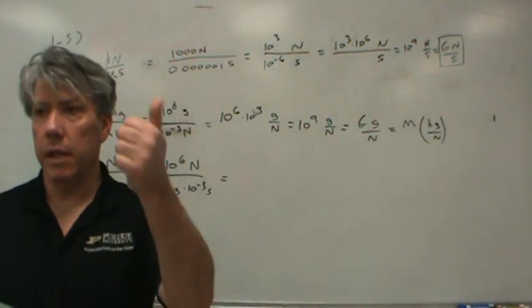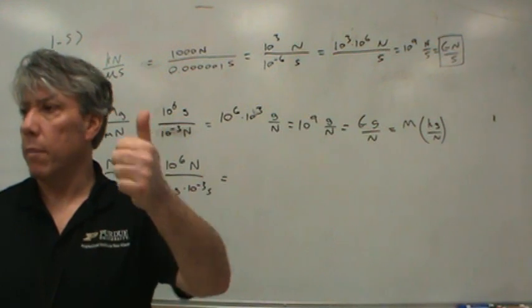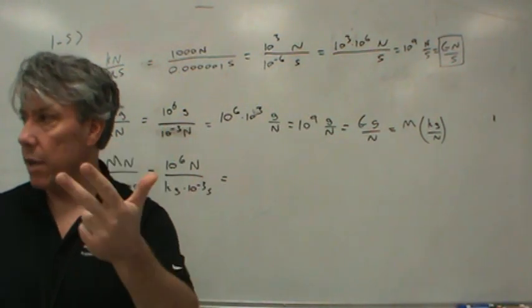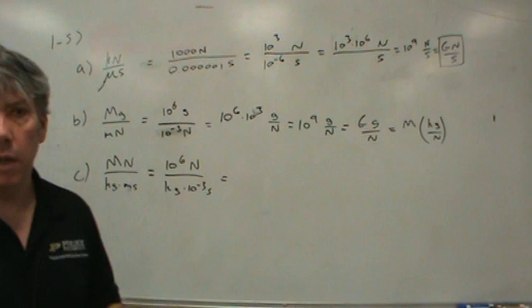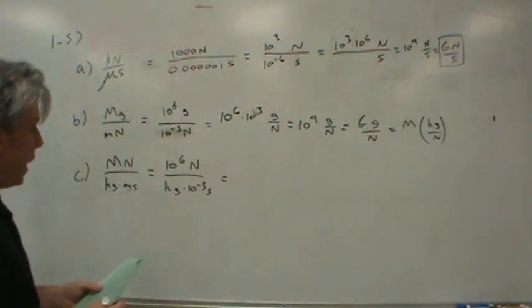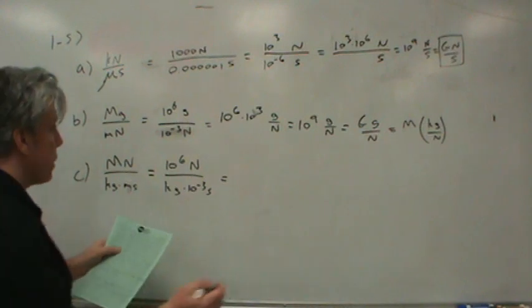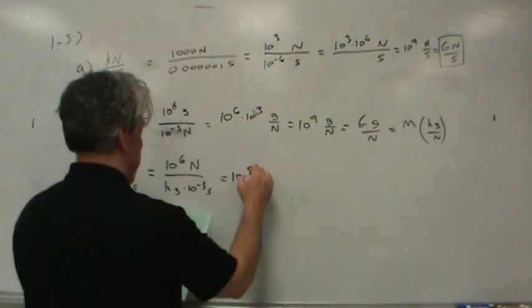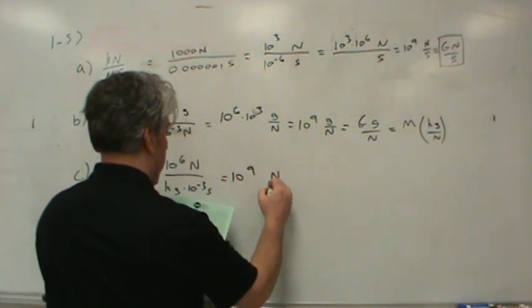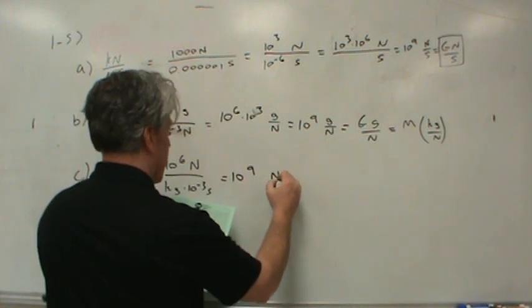By the way, pico, anybody know what that one is? Ten to the negative twelfth. That's right. So you've got milli, negative third. You've got micro, negative sixth. Nano, negative ninth. Pico, negative twelfth. Okay? It goes by thousands. Anyway, that's all in the front of your book. You don't have to memorize it.